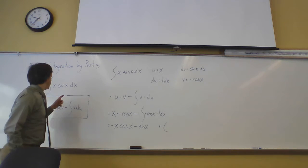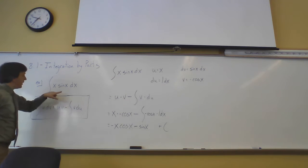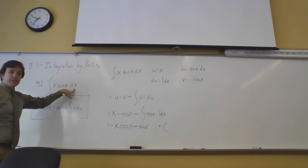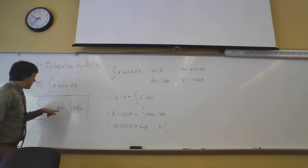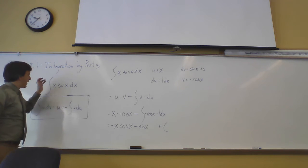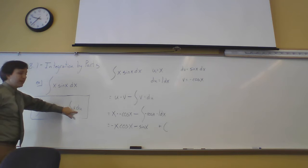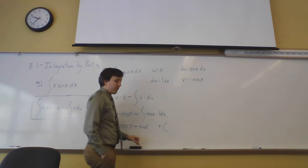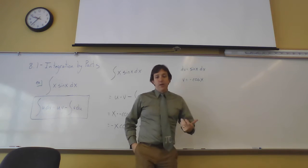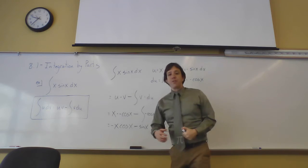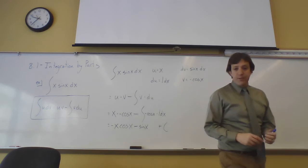Your goal is to pick dv to be something with a relatively simple anti-derivative, and you hope that the derivative piece du will simplify the remaining integral. Let's do some more examples.